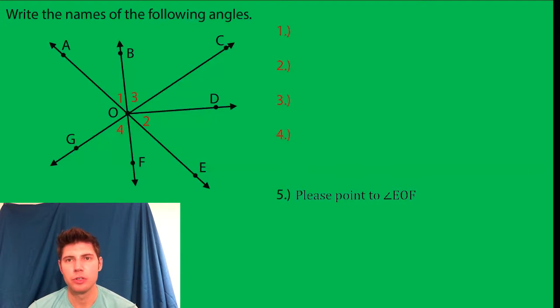Here's a fun one about how to name angles. Angle 1 here, how would we name that? Well, it's angle AOB. If you're tracing out the angle, it's AOB. So I would write angle AOB. There's the first one.